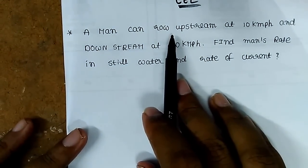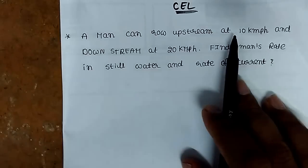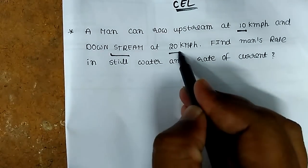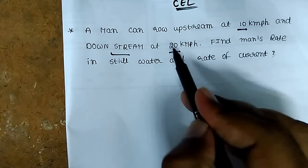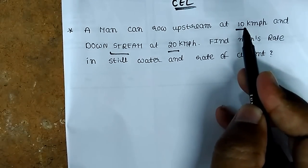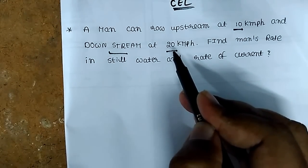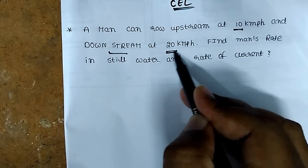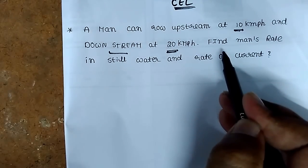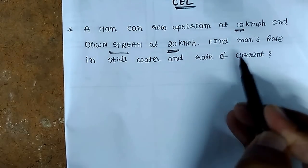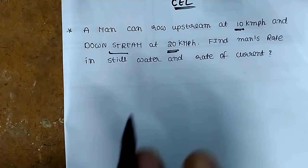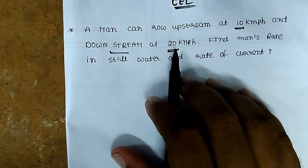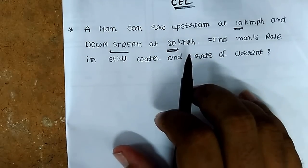A man can row upstream at 10 km per hour. Upstream is 10 km per hour speed and downstream is 20 km per hour speed. So this is the one example. You can find the man's rate in still water and rate of current.